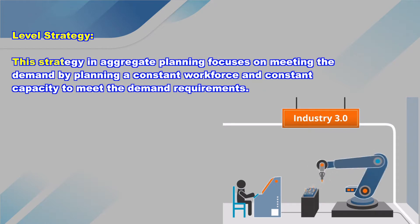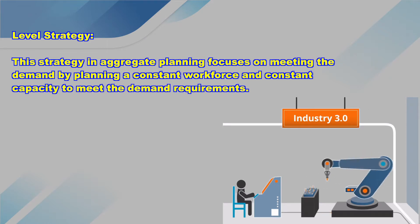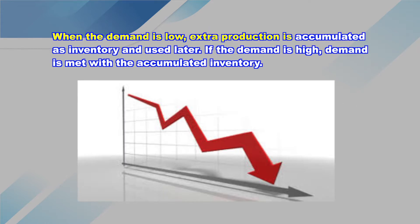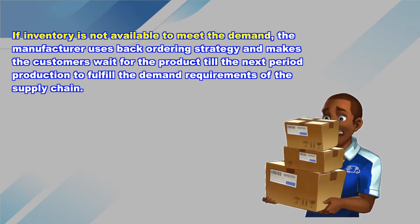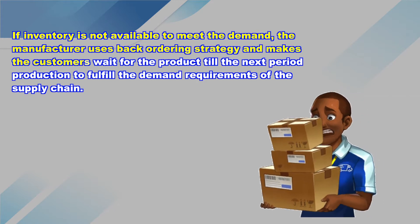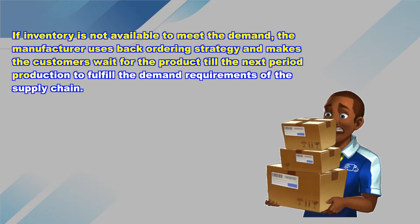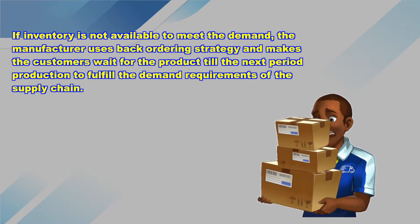The third strategy is the level strategy. This strategy in aggregate planning focuses on meeting the demand by planning a constant workforce and a constant capacity. When demand is low, extra production is accumulated as inventory and used later. If demand is high, it is met with the accumulated inventory. If the accumulated inventory is not enough, the manufacturer uses back ordering, making the customer wait until the next period's production fulfills the demand.